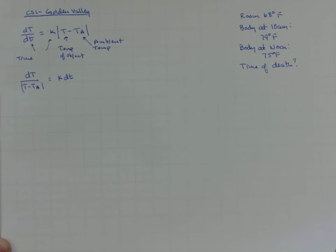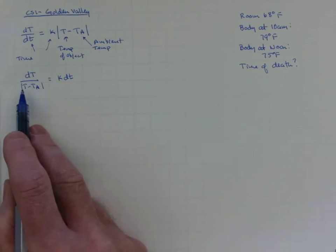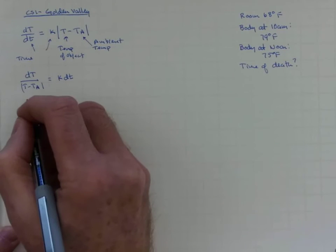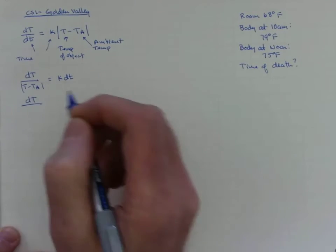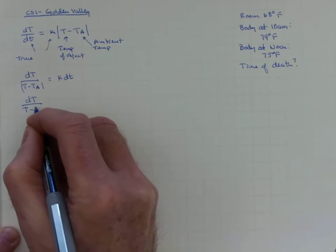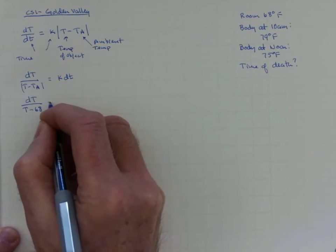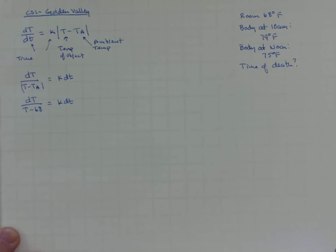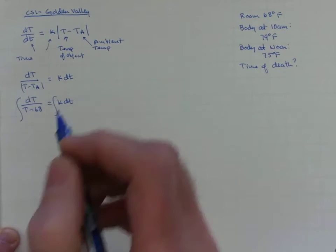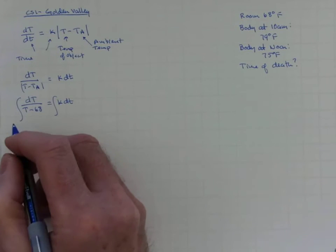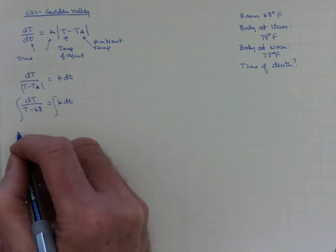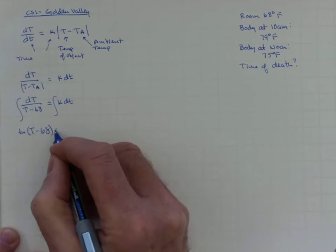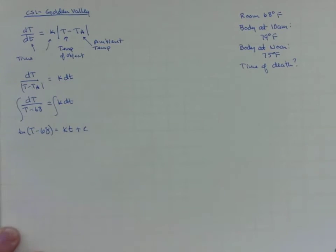We can also in this case take advantage of the fact that we know that the body is warmer than the room and we know that the room is a constant 68 degrees. So in our particular instance, the left-hand side reduces to dT/(T - 68) and the absolute value is redundant. That's equal to k dt. So now we can go ahead and integrate, and the integrals are not particularly tough. On the left we're going to have the natural log of (T - 68), and on the right we are going to have kt plus a constant of integration.